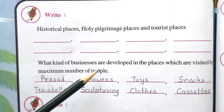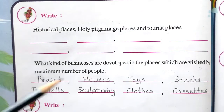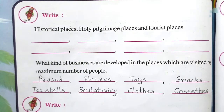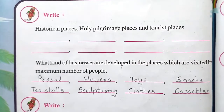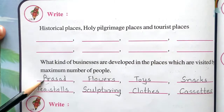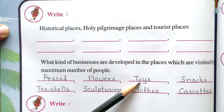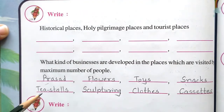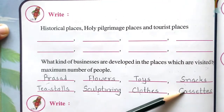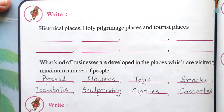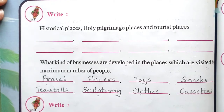Then next is: what kind of businesses are developed in the places which are visited by the maximum number of people? At such places where many people visit, the businesses developed include: prasad, flowers, toys, snacks, tea stalls, sculpturing, clothes, and many other similar businesses are developed there. You can write this in your textbook.